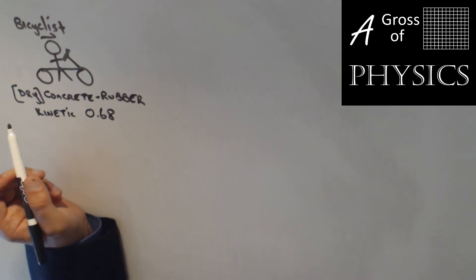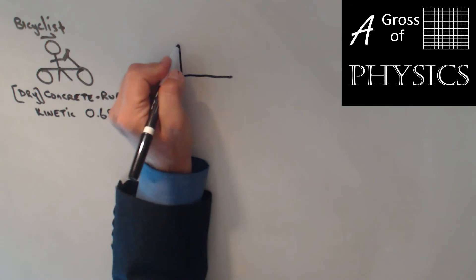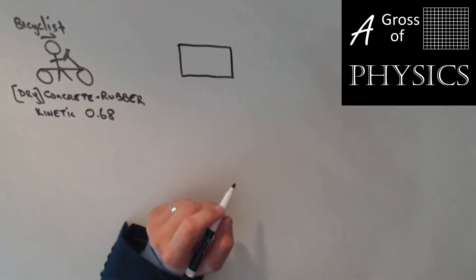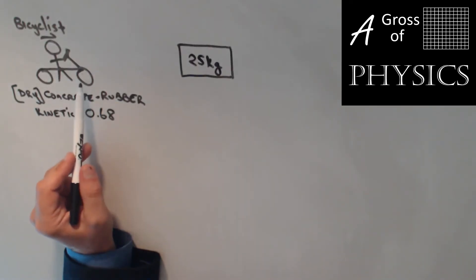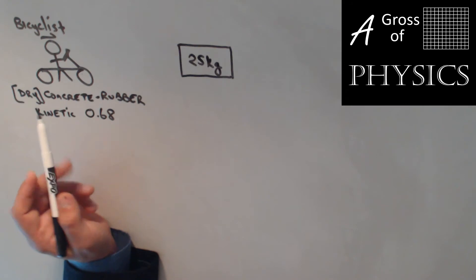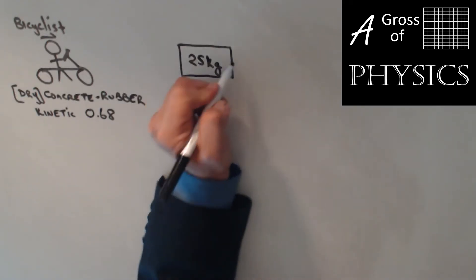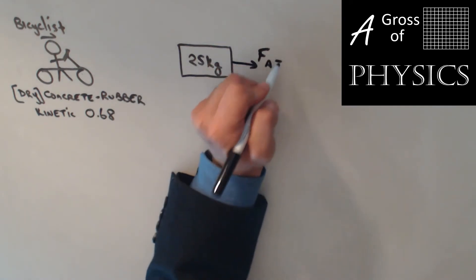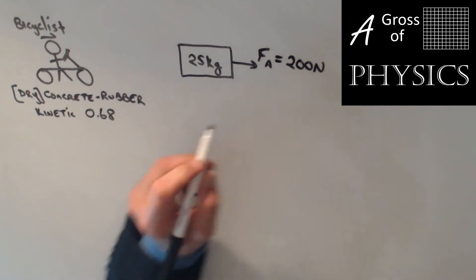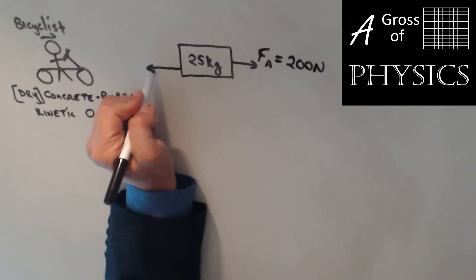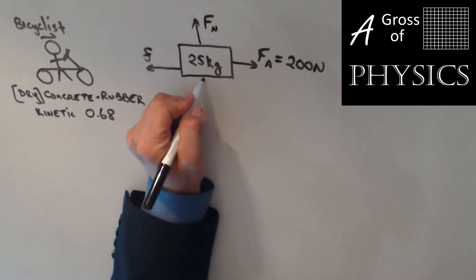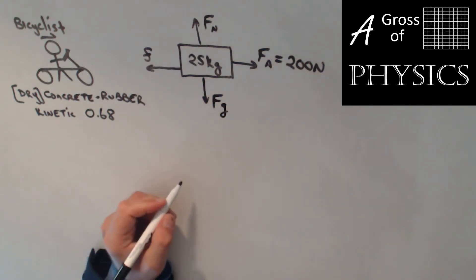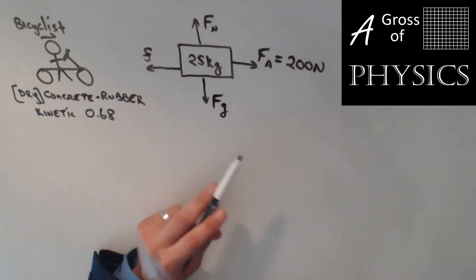Our first step should always be to draw a free body diagram starting with a box and drawing all forces acting on it. The bicyclist has a mass of 25 kilograms — probably a kid — and is traveling with a forward applied force of 200 newtons. Friction opposes that, so it acts backwards. We also have the normal force pushing up from the ground and gravity pulling down. Our four forces are: normal force, gravity, applied force, and friction.